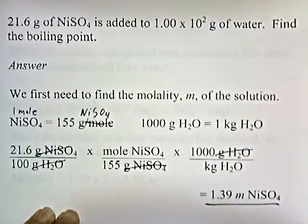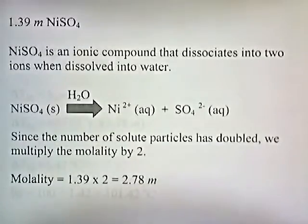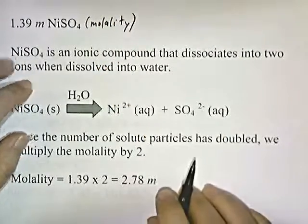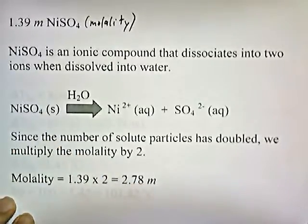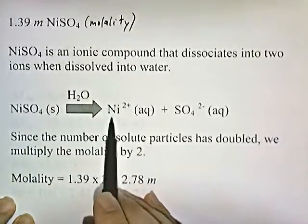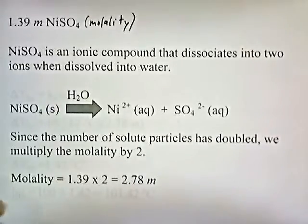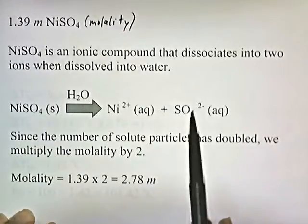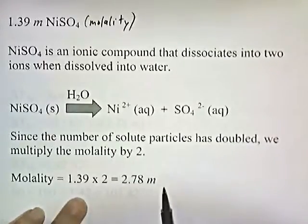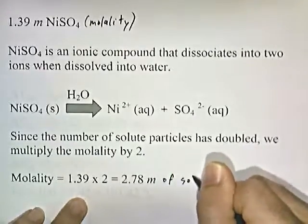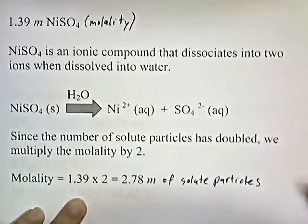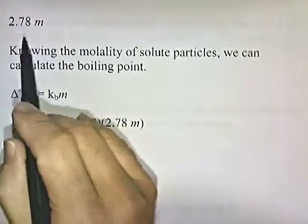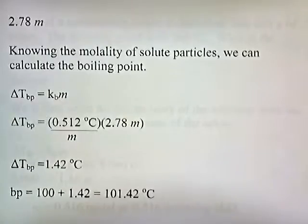Now, nickel sulfate is an ionic compound that dissociates into two ions when dissolved in water. Since the number of solute particles has doubled, we need to multiply the molality by two. The molality of the solution is 1.39, but since it breaks into two particles, we multiply by two. This gives us 2.78 molal of solute particles.